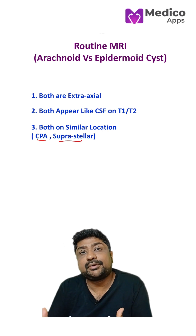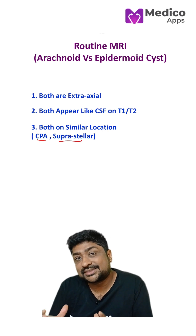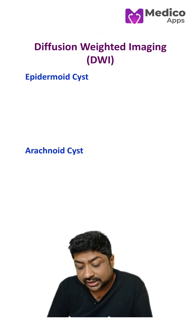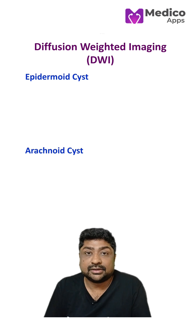So how do we differentiate between arachnoid and epidermoid cyst? The correct answer is diffusion weighted imaging.